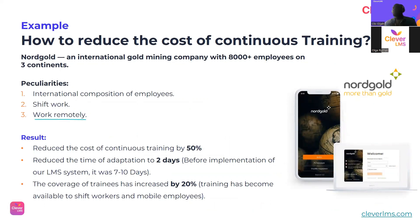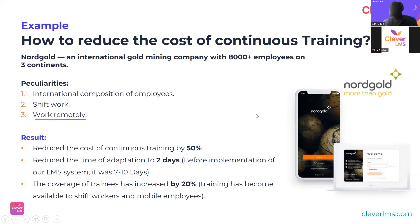The company gained 15 working days of supervisor time, which could now be devoted to their actual work, plus an increase in the frequency of network visits and improved quality of work. The second case study is Notgold, an international gold mining company with 8,000 plus employees across three continents. Their challenges included an international, multilingual workforce, shift work, and remote work — which became even more prominent after the 2020 pandemic. After implementing the LMS, the cost of continuous training was reduced by 50%, and the time of adaptation was reduced from seven to ten days down to two days.